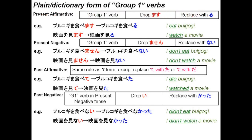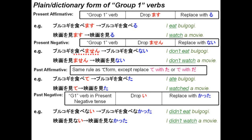Let's look at putting group 1 verbs into the present affirmative plain form. It's really simple. All we do is drop the masu and replace it with ru. For example, tabemasu becomes taberu, mimasu becomes miru. If we want to put a verb into the present negative, then we replace masen with nai. For example, tabemasen becomes tabenai, mimasen becomes minai.